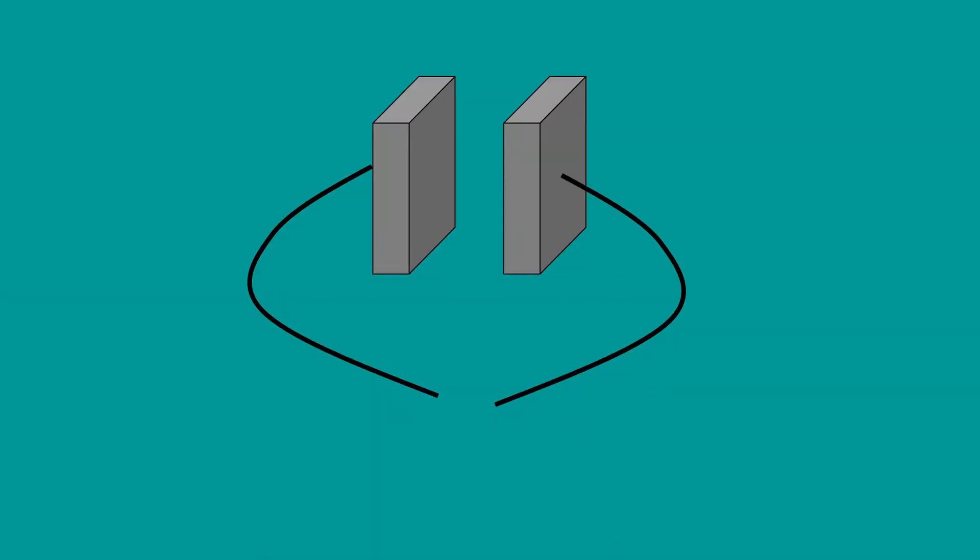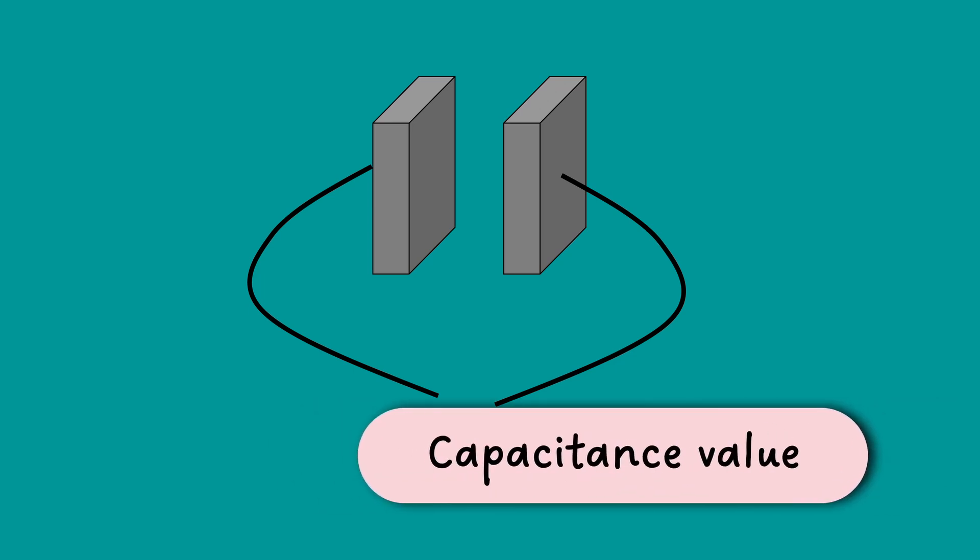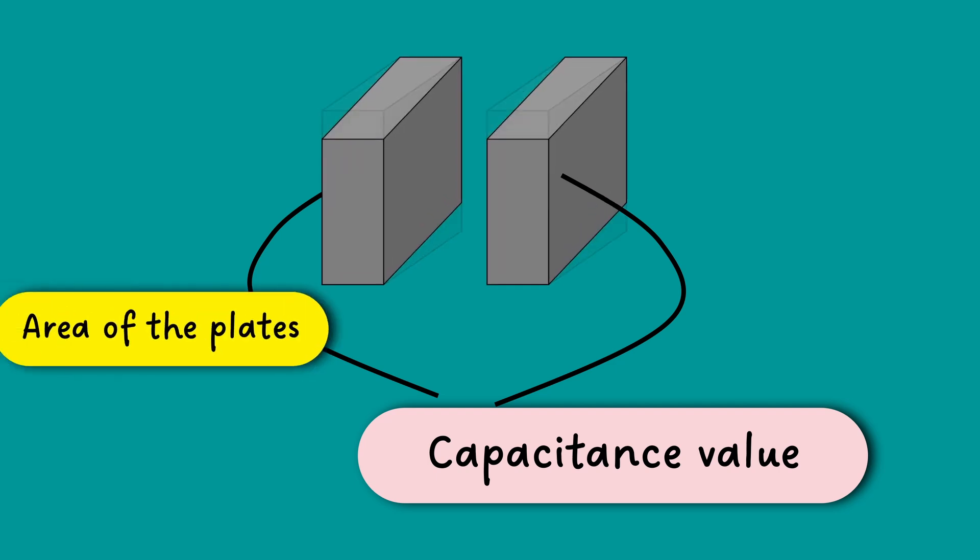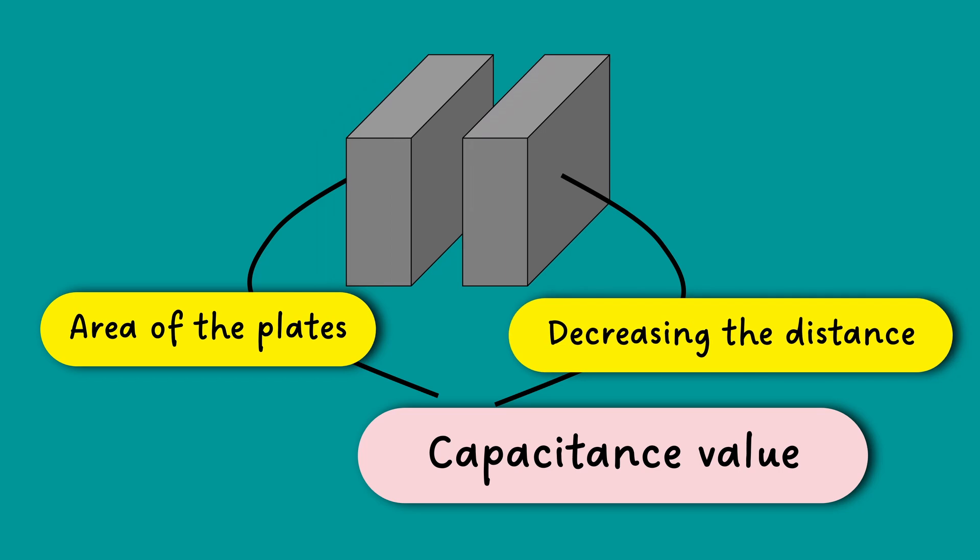The amount of charge a capacitor can store depends on the capacitance value. The capacitance of a capacitor can be increased by increasing the area of the plates or decreasing the distance between the plates. Placing an insulator between the plates also increases the capacitance value.